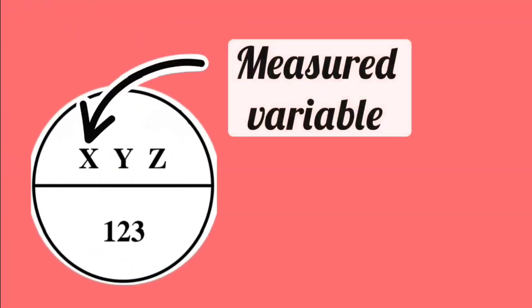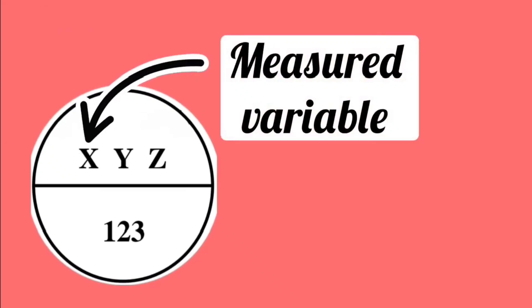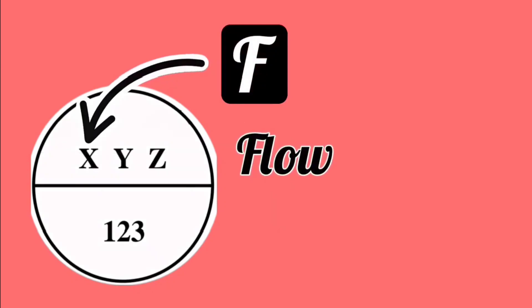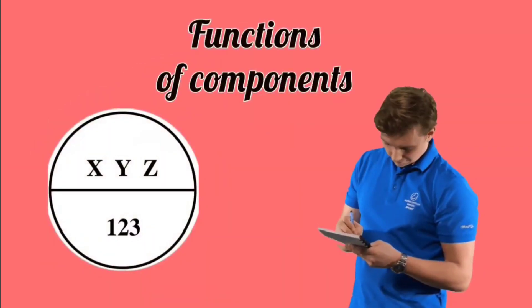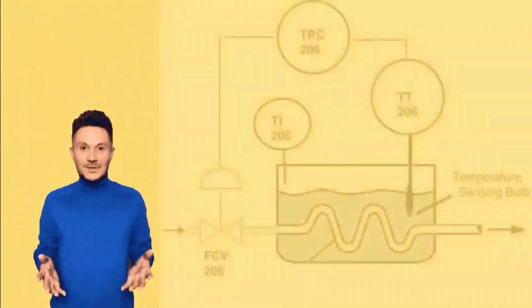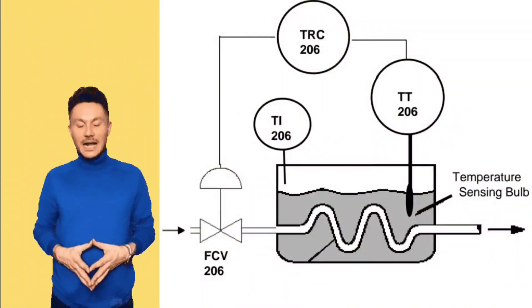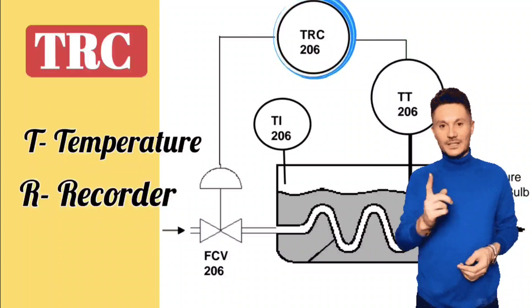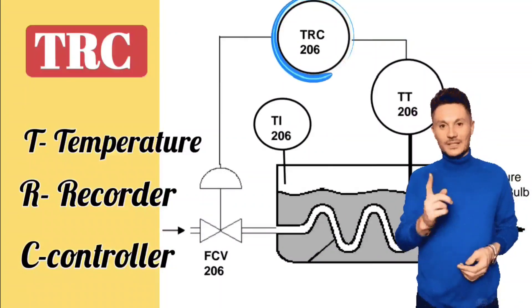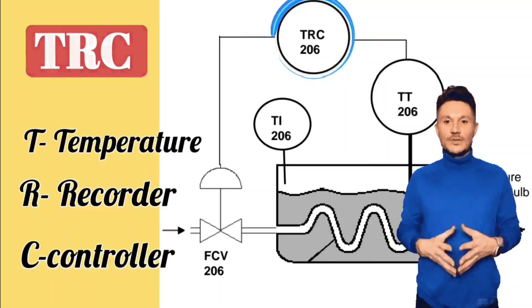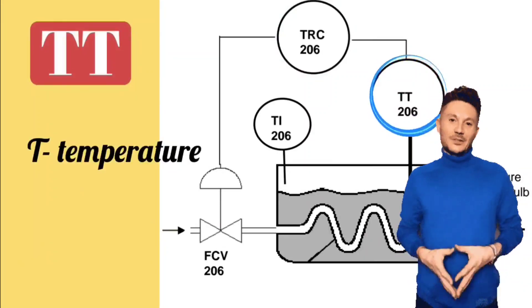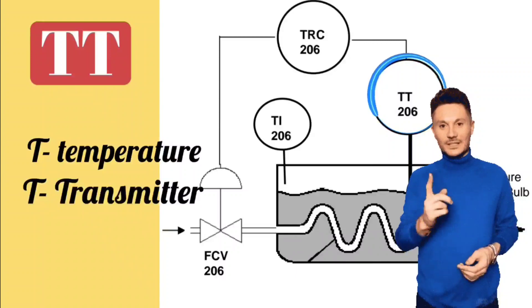On the first letter, if P is written, it means pressure. T stands for temperature, L stands for level, and F stands for flow. The rest of the letters tell the functions of the components. Let's take a small example. Here, TRC stands for T means temperature, R means recorder, and C means controller, which records or measures the temperature and also controls. If TT is written, first letter stands for temperature and second letter stands for transmitter.